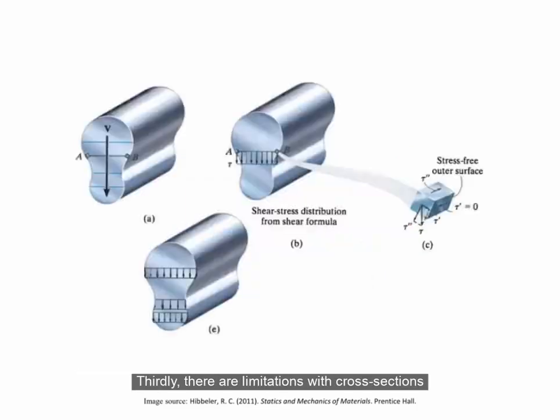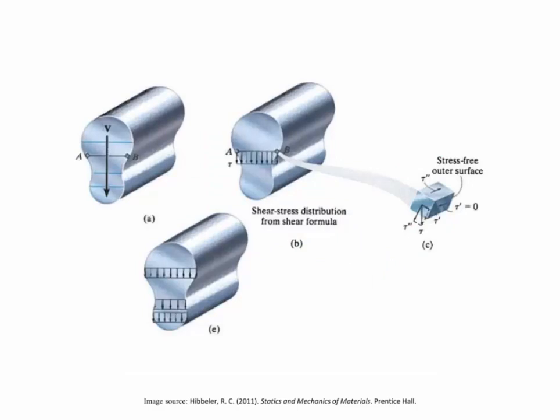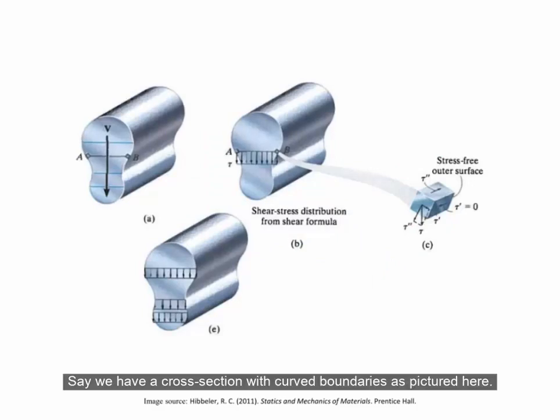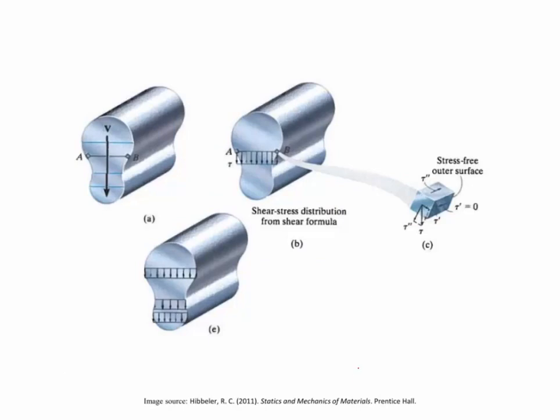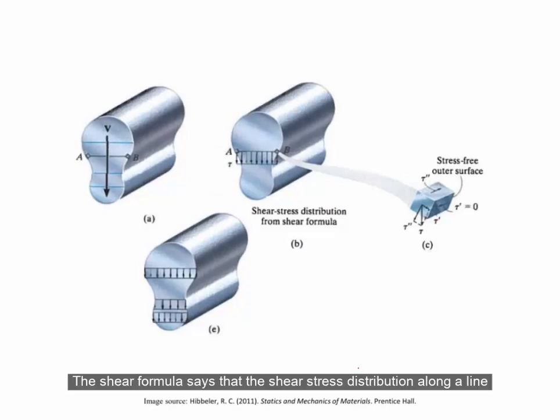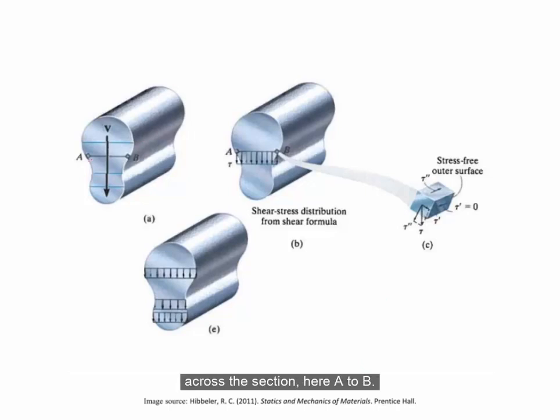Thirdly, there are limitations with cross-sections that have non-rectangular or irregular boundaries. Say we have a cross-section with curved boundaries, as pictured here. The shear formula says that the shear stress distribution along a line across the section, here A to B, should be linear and act uniformly downwards.